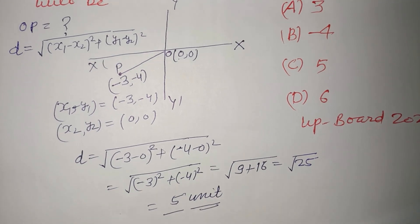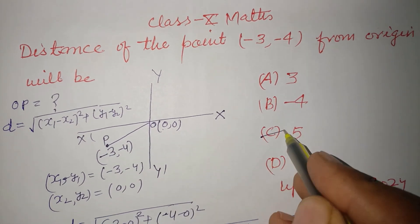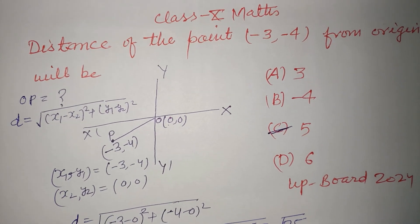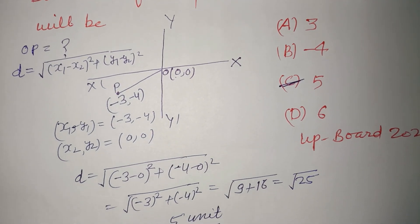So 5 units is the distance between the given point and origin, so 5 (option C) is the correct answer of this question. I hope you got it. Please like the video, subscribe the channel, thanks for watching.